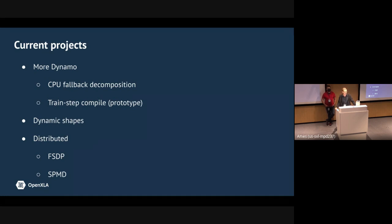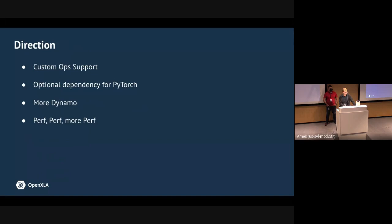There's also a large effort on dynamic shape support: PyTorch has a new feature based on symbols that let us trace operations with a symbolic notation — instead of a literal integer size, it's something like s0, letting us build traces that can be reused while preserving dynamism. We're working together with Torch XLA to work with XLA's dynamism as well as distributed work — extending FSDP and SPMD from PyTorch to Torch XLA. Going forward we want to add support for custom ops, explore becoming an optional dependency for PyTorch, and get more out of Dynamo.